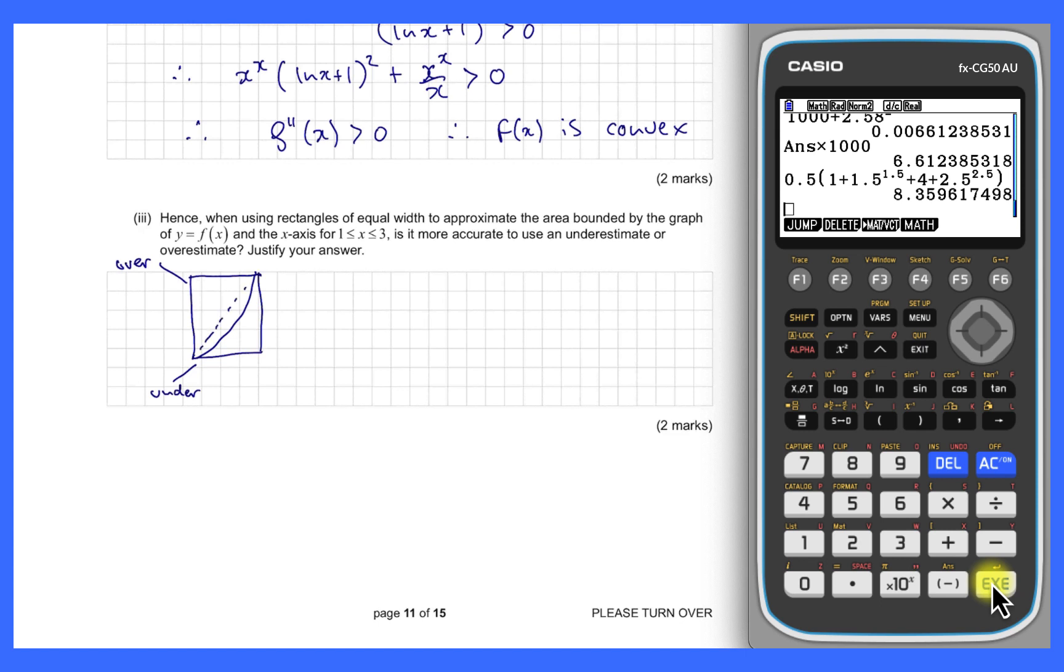This is the underestimate represented by that lower boundary, this is the overestimate represented by that upper boundary, this is basically halfway. And the fact is that this graph, because of its convex status, this is closer and this is further away. So if you think about it, the graph is sort of being pulled down like a bow and arrow away from that halfway mark.